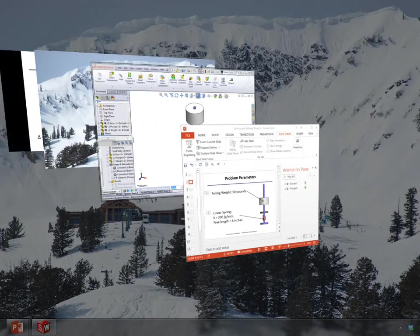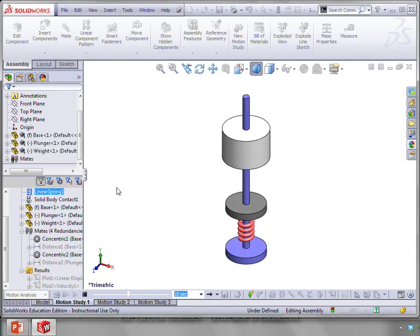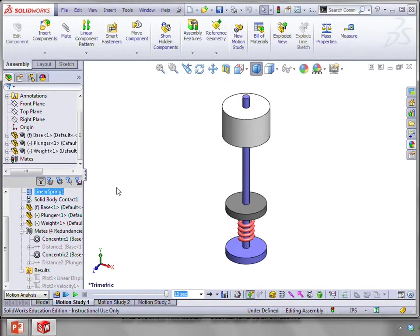So let's run the SOLIDWORKS simulation here. Now, this all takes place in under half of a second, so I'm going to play this in slow motion. So initially, you'll see that the weight's at its 12-inch location. Now it's been dropped, makes contact, compresses the spring, and then is bounced back upwards.